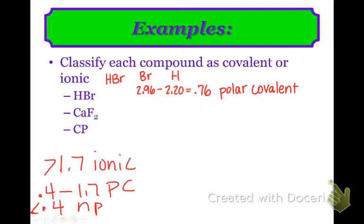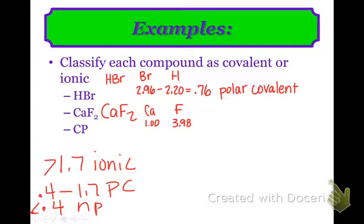Now what about CaF2? I have calcium and I have fluorine. Calcium is 1.0 and fluorine is 3.98. The difference is 2.98, which is greater than 1.7, so CaF2 has ionic character — it's ionic.